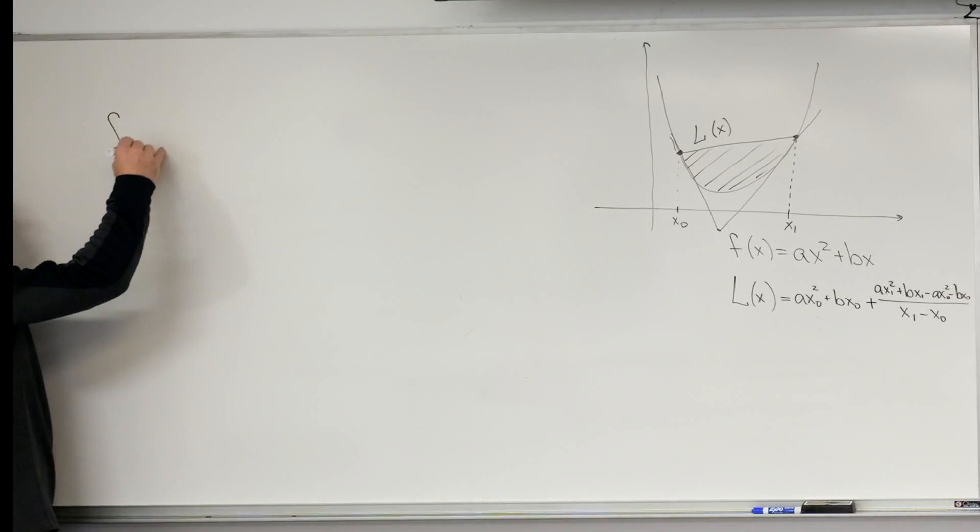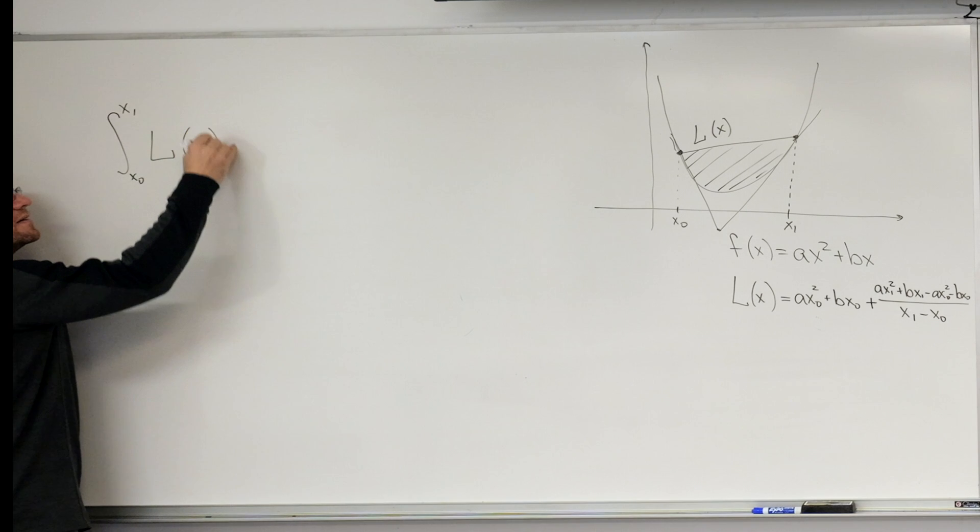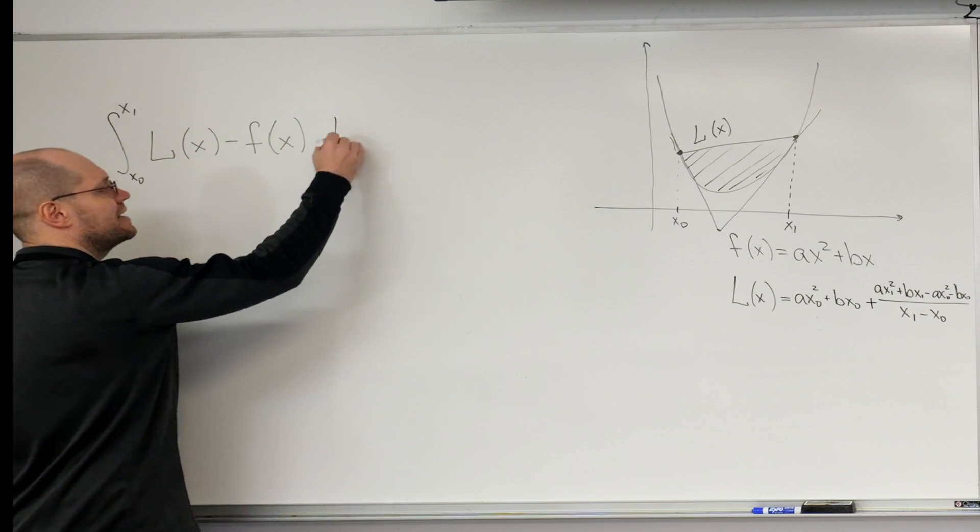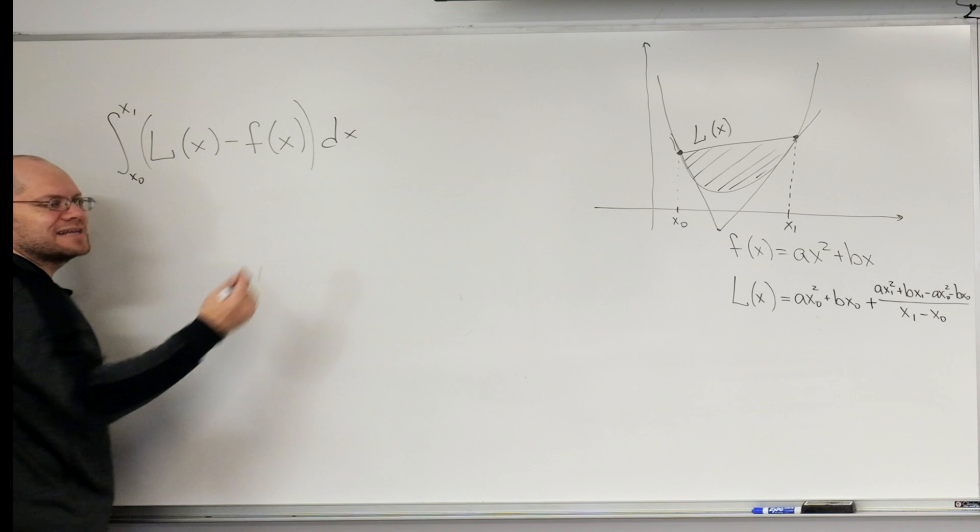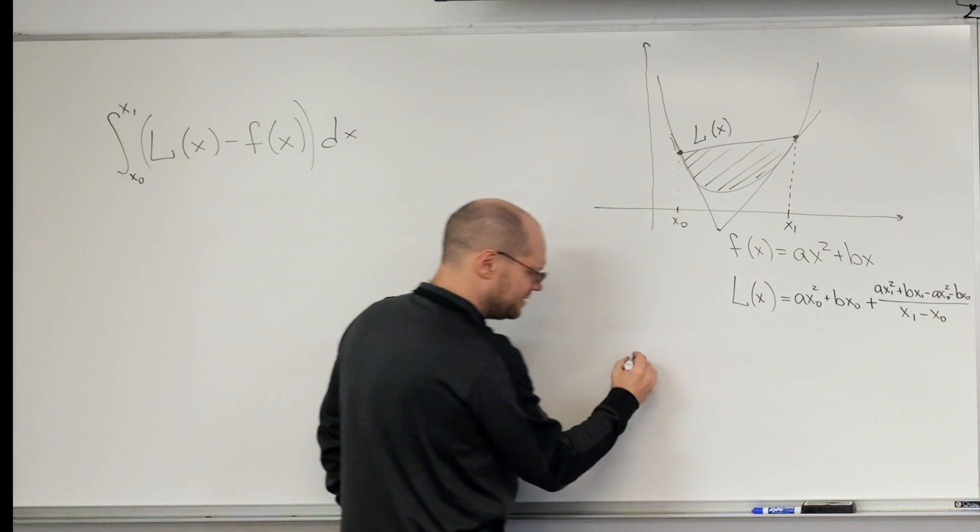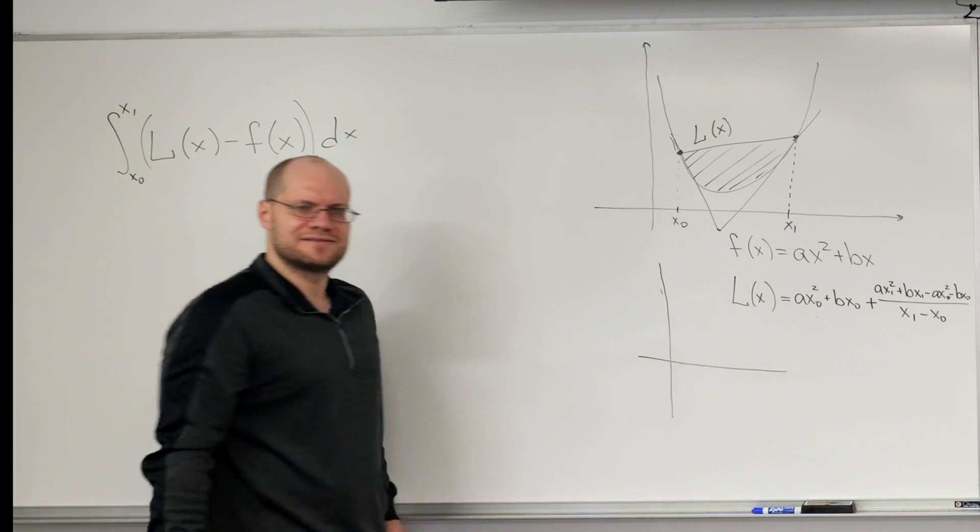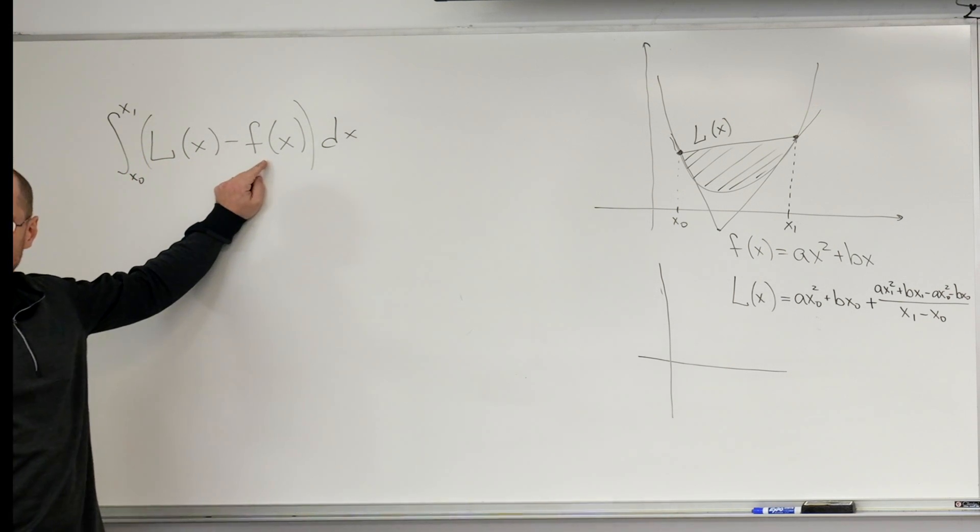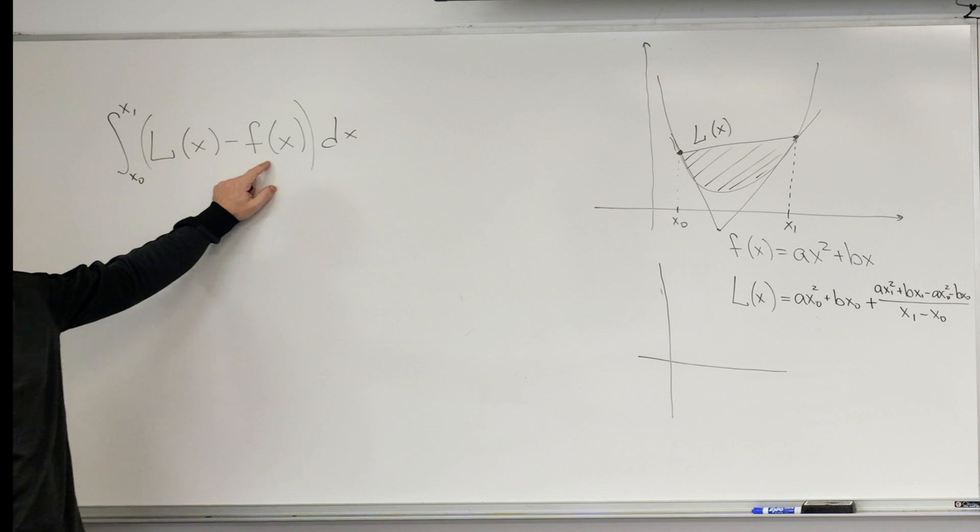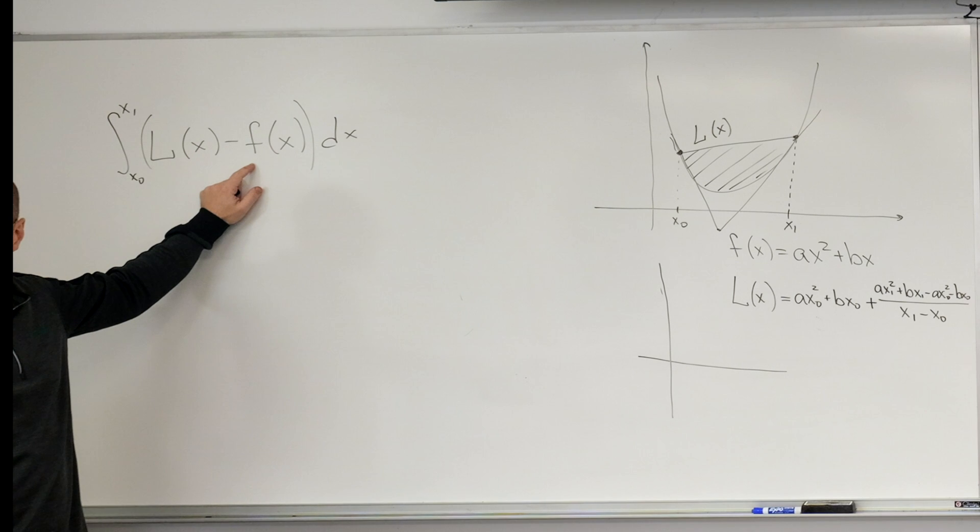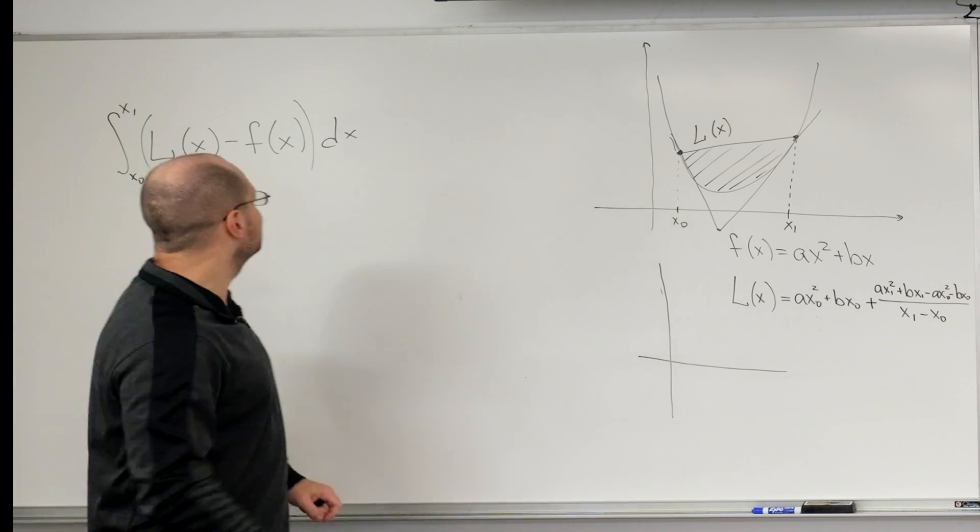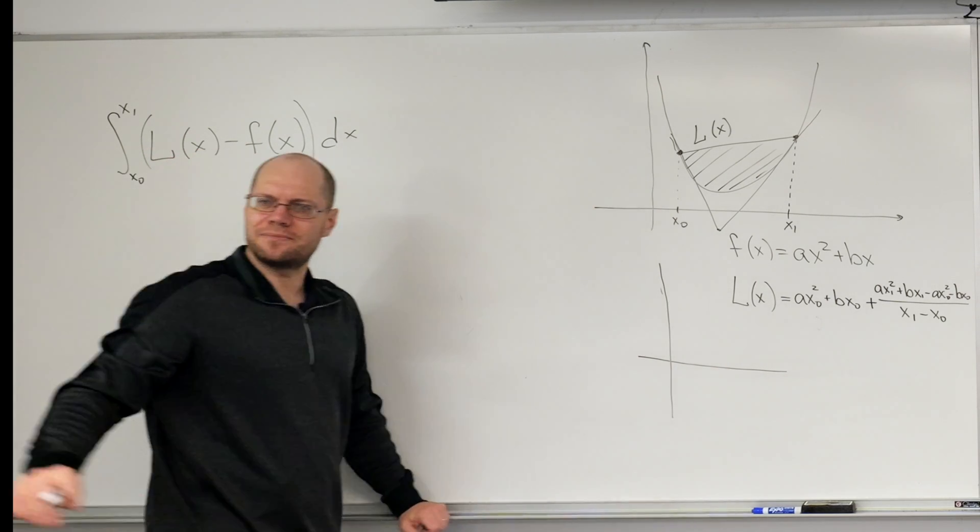So what we essentially need to integrate from x0 to x1 is the difference L(x) minus f(x) dx. First of all, this is a parabola. Let's name all of the things that we can name about this difference. It's a parabola, because it's the difference between a quadratic function and a linear function. Is it a right-side-up parabola or an upside-down parabola? Upside-down.